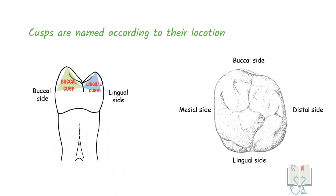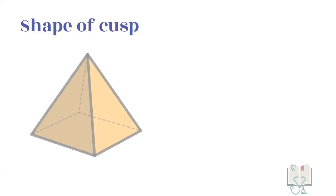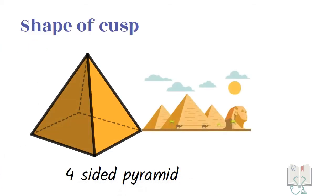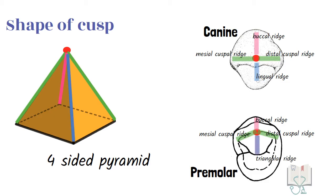In molars, cusps are on four corners of the occlusal surface: mesiobuccal cusp, distobuccal cusp, mesiolingual cusp, and distolingual cusp. The shape of the cusp is like a four-sided pyramid, due to four ridges running from the cusp tip in different directions: two cuspal ridges (one mesial, one distal), one ridge running to the cervical line (buccal or lingual ridge depending on surface), and one triangular ridge running towards the center of the occlusal surface.